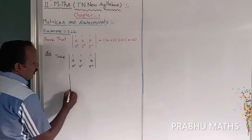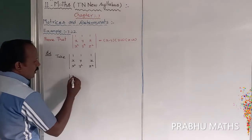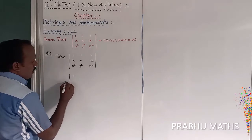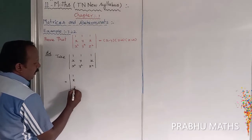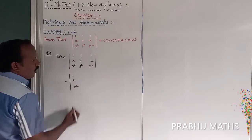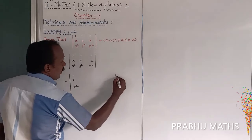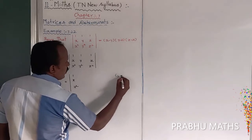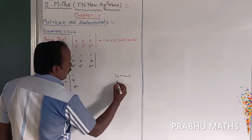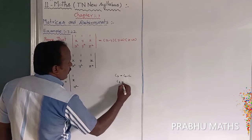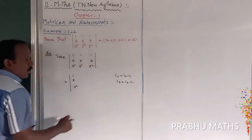For column C1 there are no changes — it remains [1, x, x²]. Next, apply the column operations: C2 → C2 − C1 and C3 → C3 − C1. That is the rule we have to use.